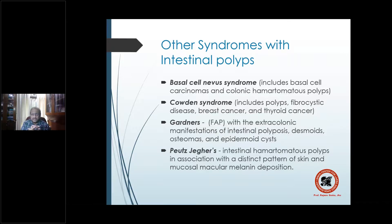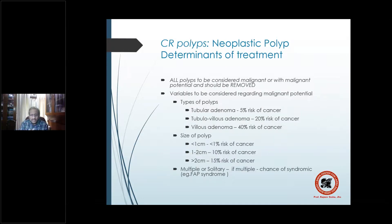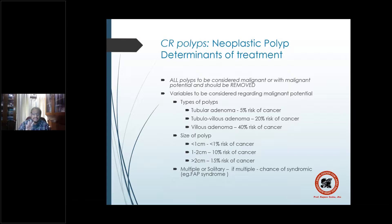All these syndromes — whether Peutz-Jeghers, Gardner, Cowden — can be part of sporadic or syndromic occurrences, familiar or familial. Overall, the incidence of malignancy in colorectal polyps is only 5 to 10%; fortunately 90 to 95% are usually not malignant. But when you have a polyp, all polyps must be considered as having malignant potential and should be removed. The 5 to 10% figure drives the need for proper histopathological examination and treatment.